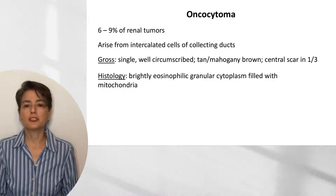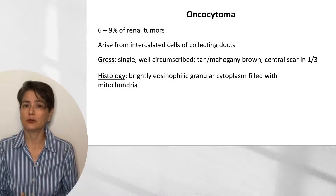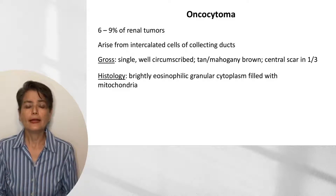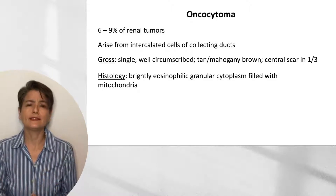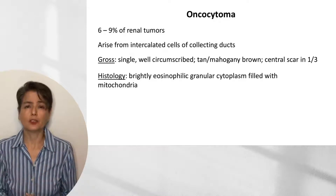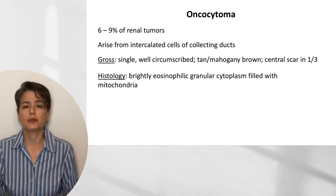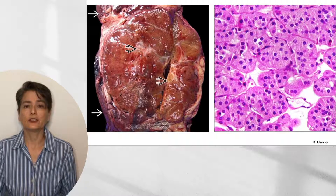Grossly, oncocytomas are typically single and well-circumscribed, with a characteristic tan to mahogany brown appearance on cut surface. About a third will have a central scar, indicative of slow growth. Histologically, these are some of the most beautiful tumors, with bright eosinophilic granular cytoplasm. The reason it's so eosinophilic and granular is that these cells are absolutely stuffed with mitochondria.